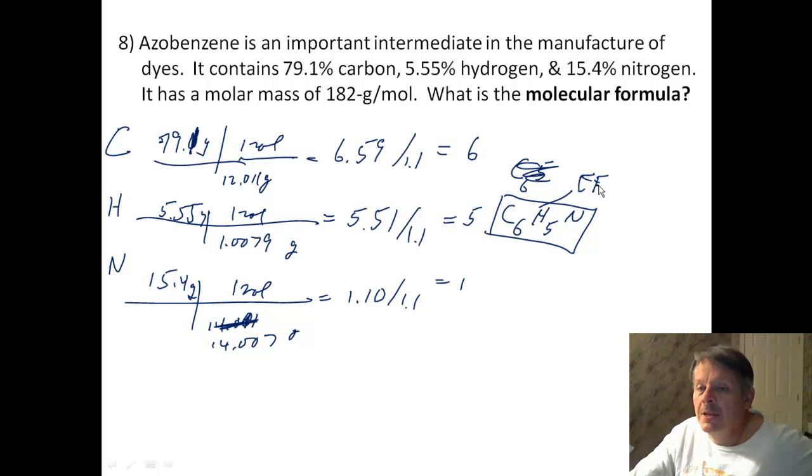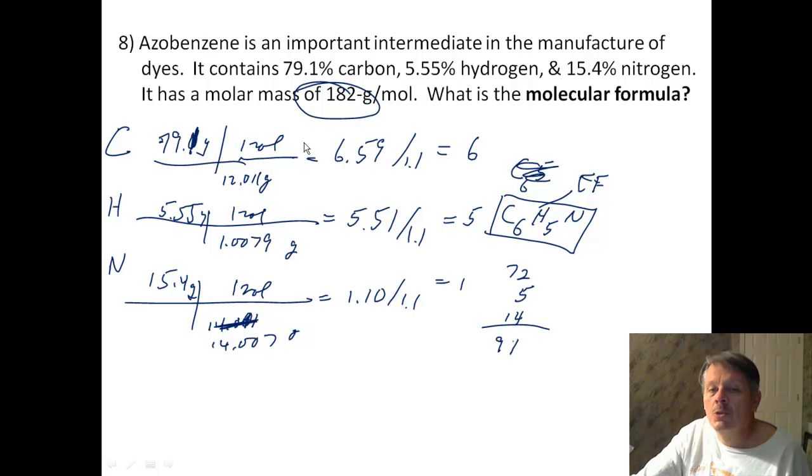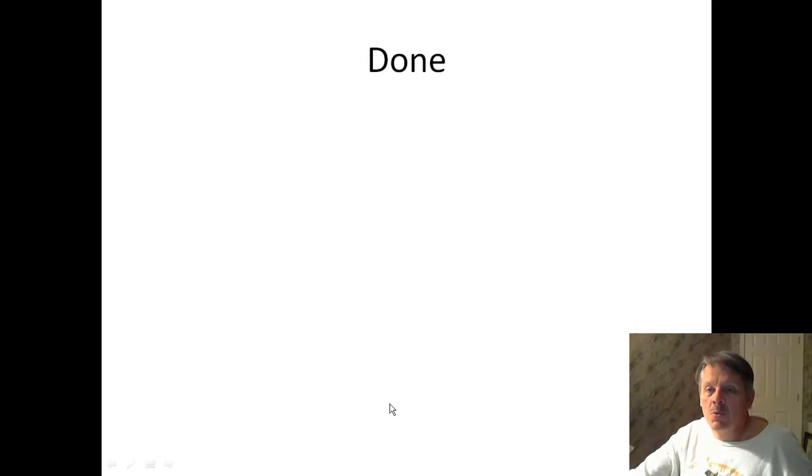So am I done? Well, maybe. We don't know yet. So if I take 12 carbons, that's 72. If I take 5 hydrogens, that's 5. If I take 1 nitrogen, that's 14. If I add them up, I get 91. But I don't want 91, I want 182. And 182 is clearly twice 91. So my molecular formula would be twice the empirical. It would be C12H10N2. All right. That's it, folks. If you have questions, struggled on any of them, please let us know. We'll be happy to help. And so we'll see you in class. Have a good day. Bye-bye.